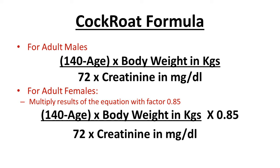The Cockcroft-Gault formula is another formula used for adults. For adult males: (140 minus age) multiplied by body weight in kg, divided by 72 multiplied by creatinine in mg/dL. This gives creatinine clearance or eGFR in ml per minute per 1.73 meter square. For adult females, multiply the result by a factor of 0.85, so creatinine clearance will be slightly lower than in adult males.